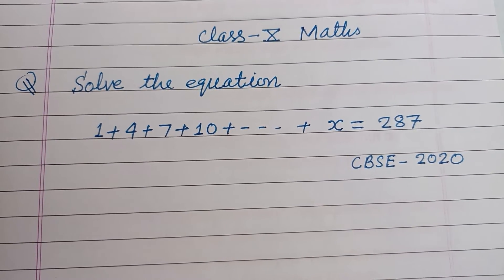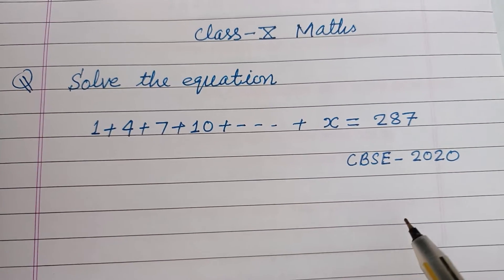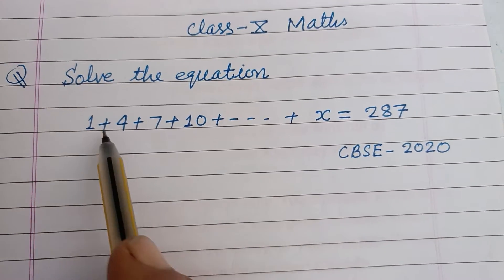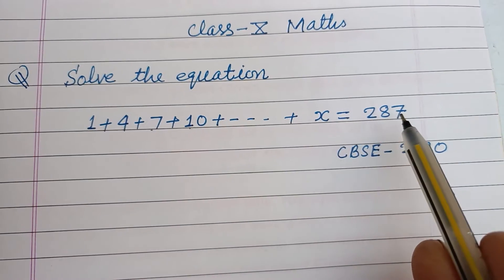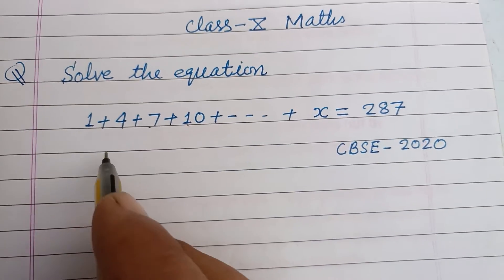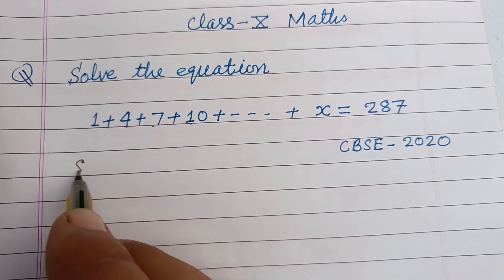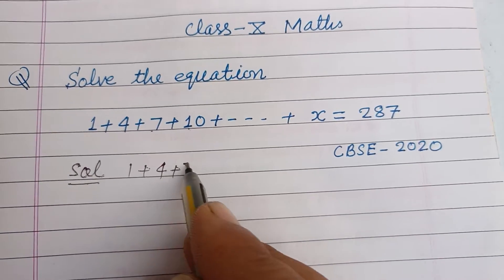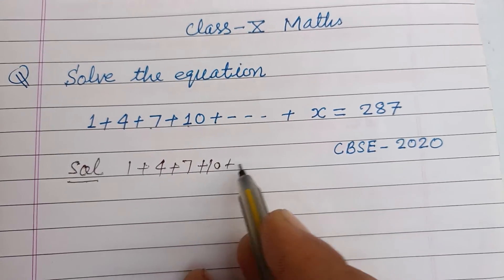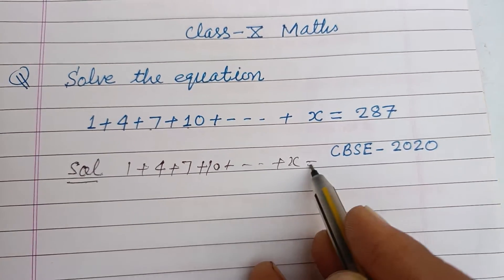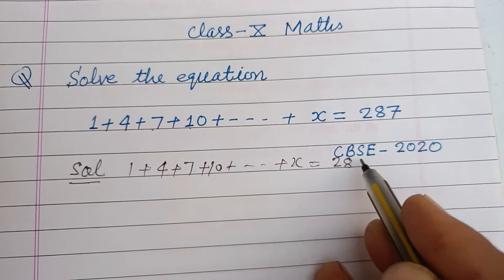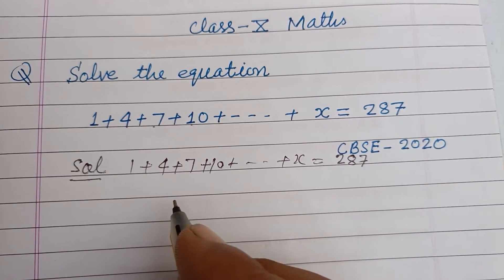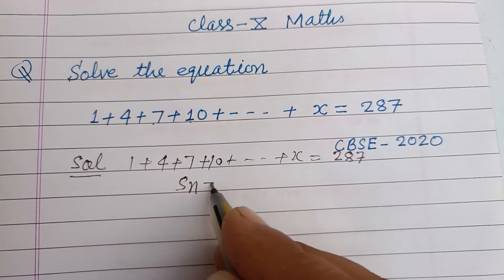Hello viewers, warm welcome to this YouTube channel. Question from CBSE Class 10 board exam 2020: solve the equation 1 plus 4 plus 7 plus 10 and so on plus x equal to 287. Here, 1 + 4 + 7 + 10 + ... + x is an arithmetic progression whose sum is given as 287.